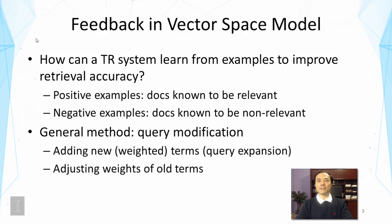The general method in the vector space model for feedback is to modify our query vector. We want to place the query vector in a better position to make it more accurate. That means we have to do something to the vector elements — we might add new terms or adjust the weights of old terms and assign weights to new terms. As a result, the query will have more terms, so we often call this query expansion.